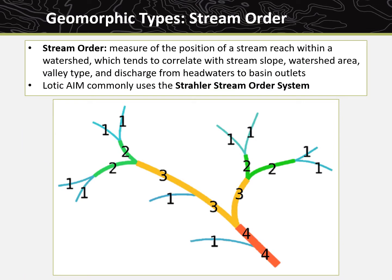Some of the biggest factors influencing stream morphology at the watershed scale are stream slope, watershed area, valley type, and the amount of flow or discharge. In general, these factors vary in a predictable pattern throughout watersheds from mountain headwaters to basin outlets, with mountain headwater streams having steeper slopes, smaller watershed areas, and lower discharge. Stream order is the position of a stream reach within a watershed, which tends to correlate with the spatial patterns of stream slope, watershed area, and discharge from headwaters to basin outlets.